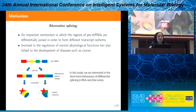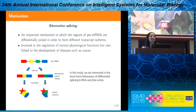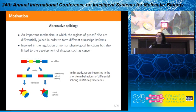Normally this alternative splicing is a normal physiological function, but if some abnormalities occur, they can also cause diseases such as cancer. In this study, we are mostly interested in the short-term behaviors of differential splicing in RNA-seq time series. We are modeling the different transcript isoform abundances during short time series, assuming that the genetics are kept the same — we are looking at only one cell line and how the abundances of different transcript isoforms change.